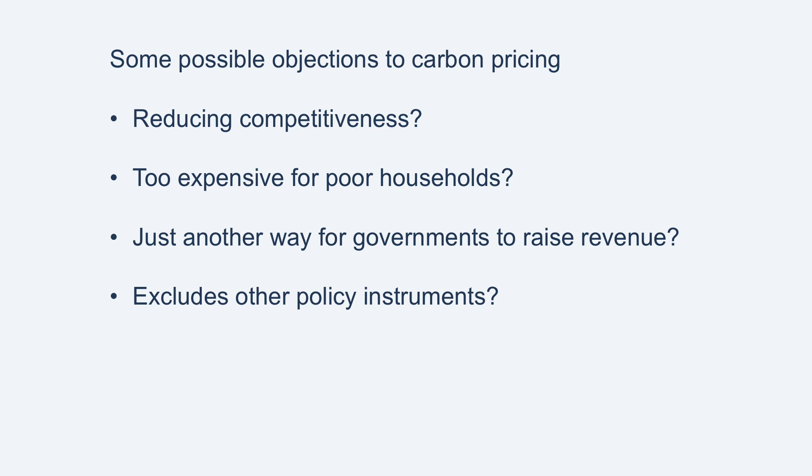Another objection is that carbon pricing precludes the use of other policy instruments, such as efficiency standards or subsidies for new technologies. However, such policies can and do run alongside carbon pricing. It is also sometimes said that although fine in theory, it doesn't work in practice and that prices are too low to be fully effective. However, a price of, say, $15 per tonne, while too low, is better than zero, and prices being too low is a reason for making prices higher, not abolishing them completely.